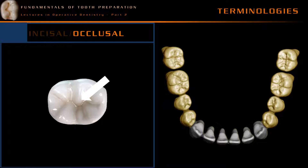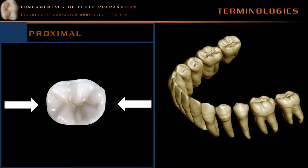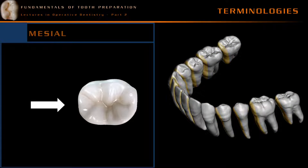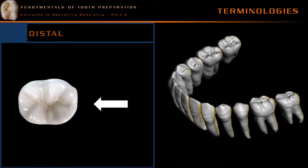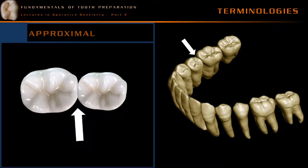The surfaces of the teeth which come in contact with the adjacent teeth are called by the term proximal surface. The mesial surface is a proximal surface of a tooth which is present away from the midline of the jaw. The contact of two proximal surfaces is called by the term proximal, and this word has unique importance in operative dentistry because of the sequence in the management of proximal caries lesions.